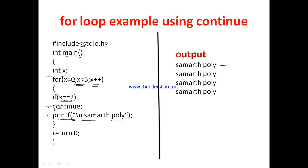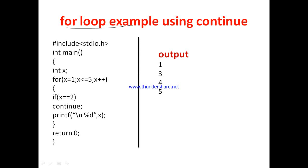When continue executes for x = 2, it skips printf and goes to the increment section: x becomes 3. For x = 3: x == 2 is false, so continue is not executed and printf 'Samartha Poly' is printed — third time. For x = 4: x == 2 is false, printf executes — fourth time. Then x becomes 5, the condition is false, and the loop terminates. So printf executes four times instead of five, because when x = 2, the printf was skipped.